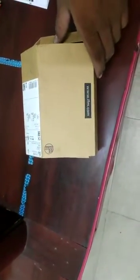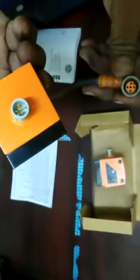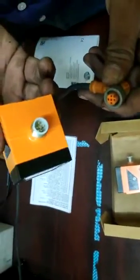First of all, I am going to show you how to unbox this IFM O1D100 sensor. This is the sensor, here is the connector, and this is the sensor pin. It works on 24V DC. I have already given 24V DC to the cable. I am going to connect and show you how this operates.